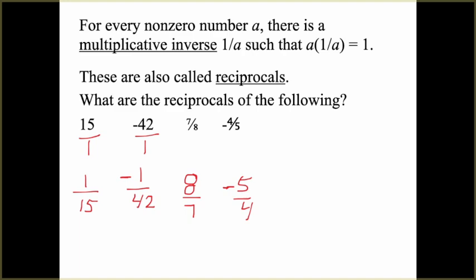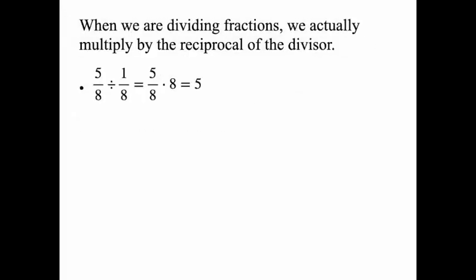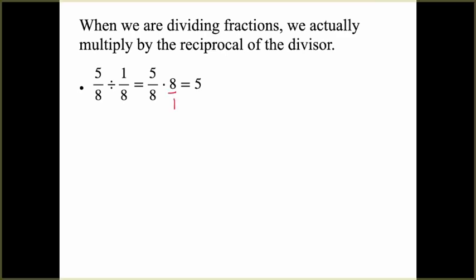Why do we need reciprocals? We need them to divide with fractions. When we divide fractions, we actually multiply by the reciprocal of the divisor. For example, 5 eighths divided by 1 eighth is the same as 5 eighths times 8 over 1. We can use canceling — the 8s cancel — and we get an answer of 5.